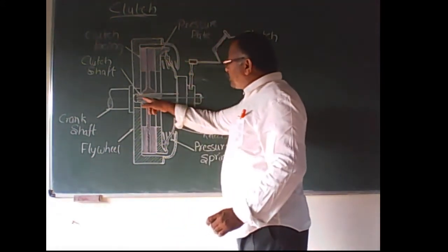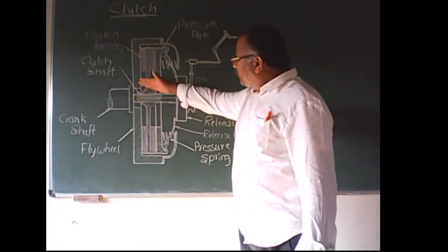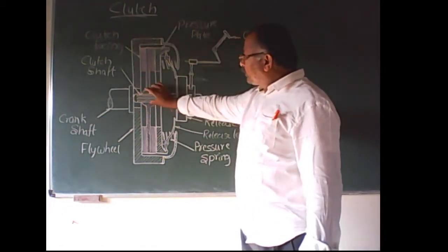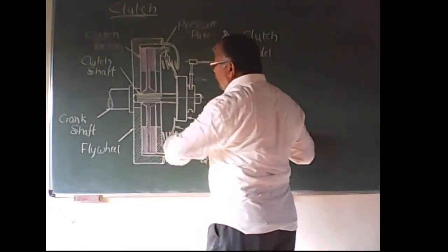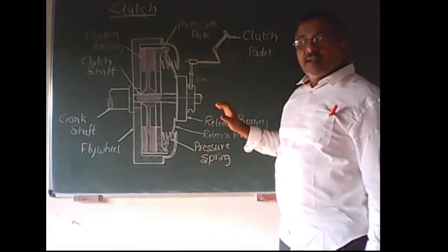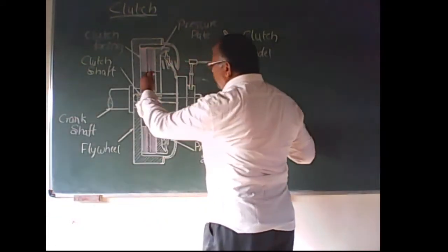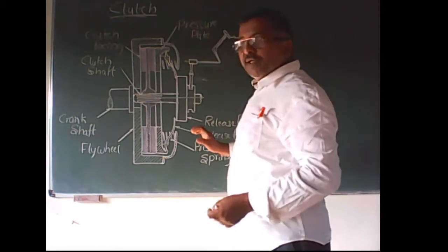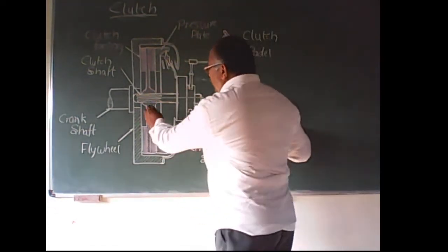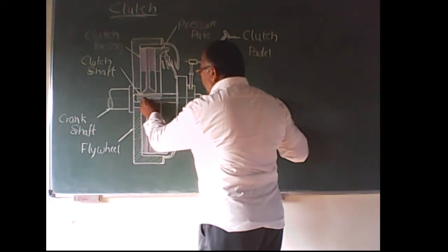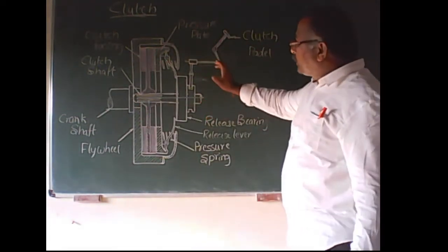The clutch plate is splined to the clutch shaft. It is mounted on the splines of the clutch shaft and is free to slide forward and backward. But when it rotates, it transmits the motion — it works with the shaft and transmits the motion to the clutch shaft.